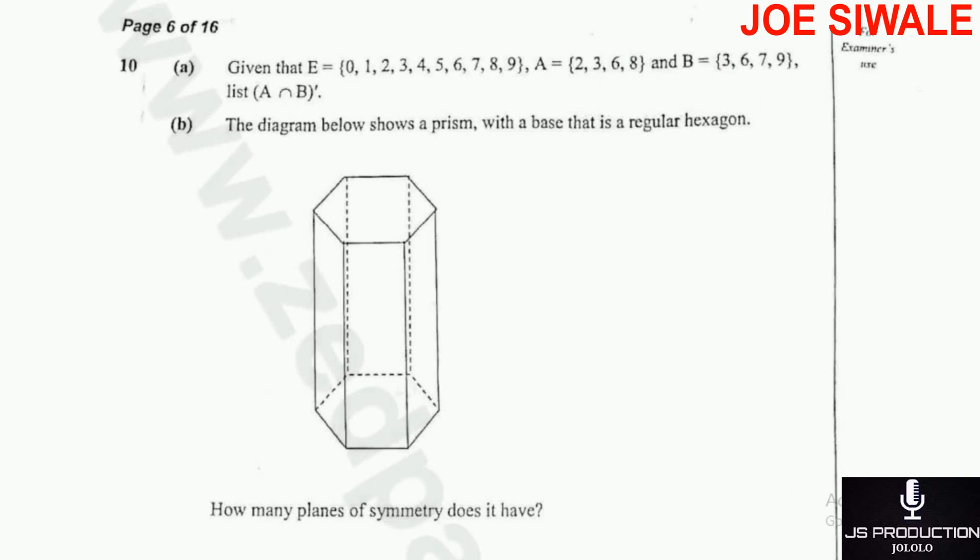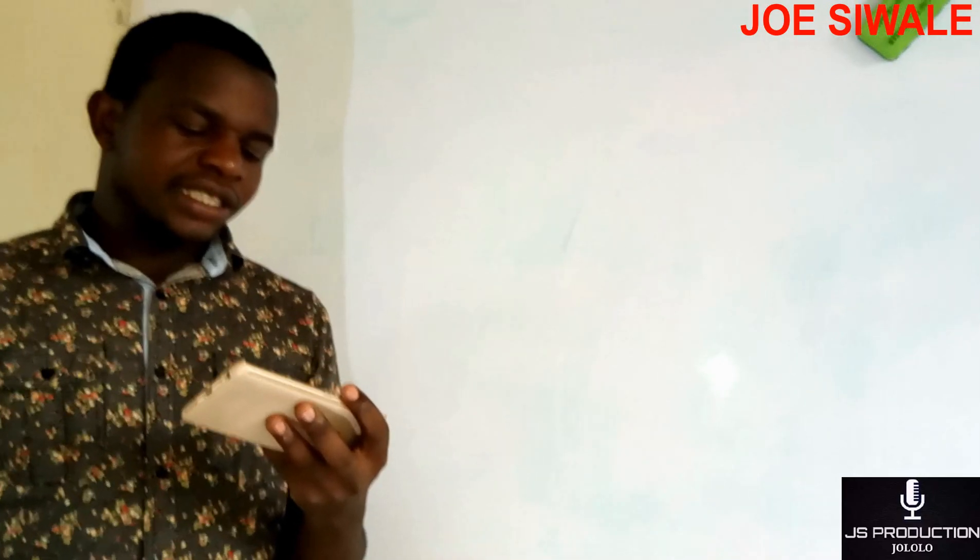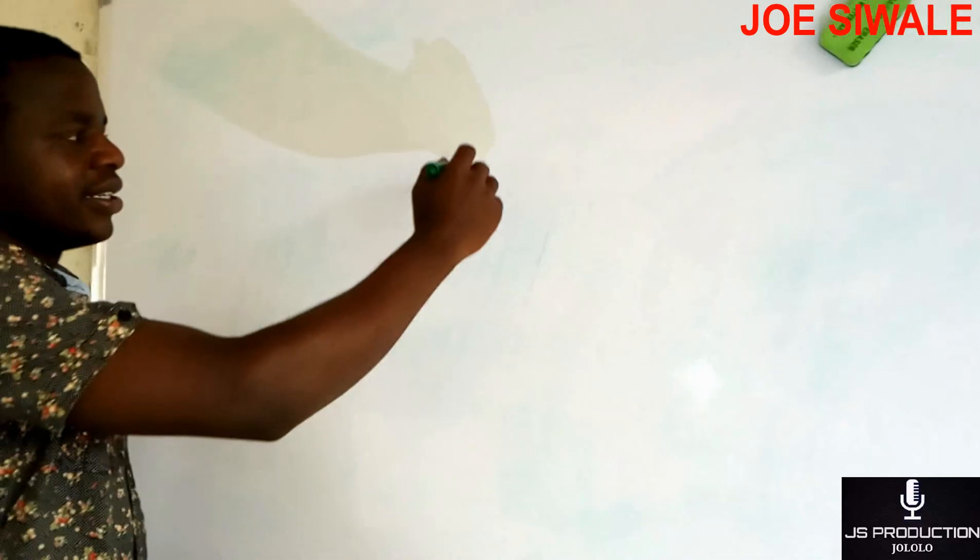So question 10B reads, the diagram below shows a prism with a base that is a regular hexagon. As you can see from the screen, that's the diagram. The question asks, how many planes of symmetry does it have? So the plane of symmetry that the prism has is only one.